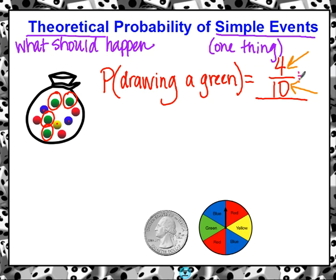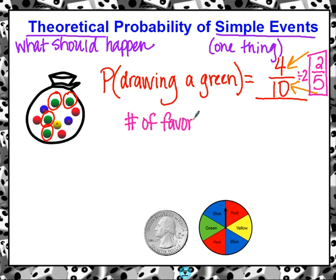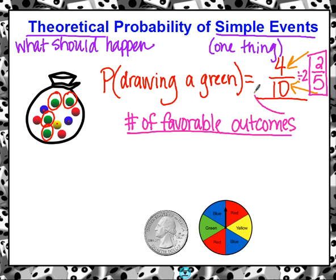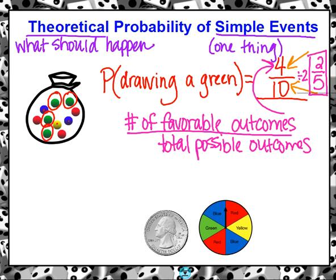We can divide four and ten both by two. Four divided by two is two, and ten divided by two is five. So the probability of drawing a green marble from the bag is two-fifths. Simple events — you're just finding how many are green out of how many total. The number of favorable outcomes was four; four of them were green out of ten total possible outcomes.